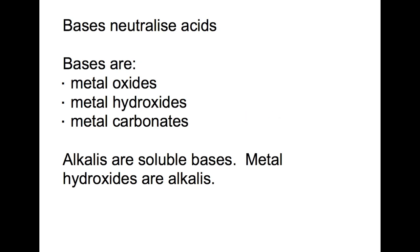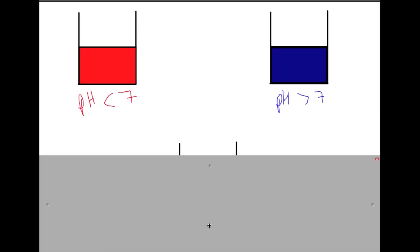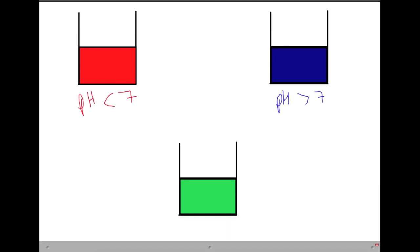So what happens when you add a base to an acid? So here on the left we have an acid which has a pH of less than 7. Here on the right we have an alkali or a base which has a pH of greater than 7. If we mix these two together in the correct proportions, then we will produce a neutral solution. This has a pH of 7.